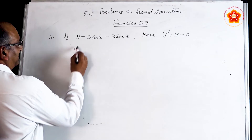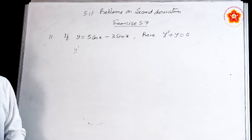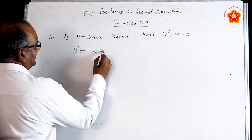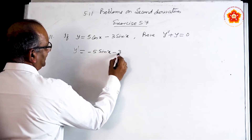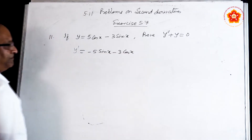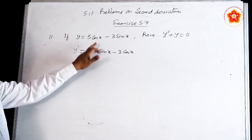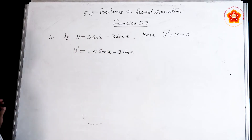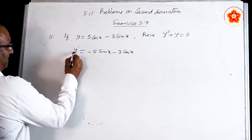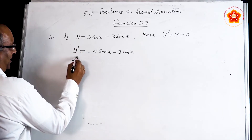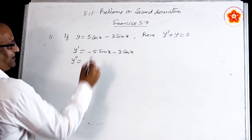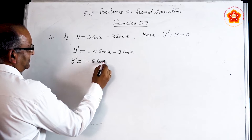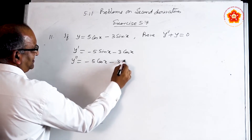What is y′? It is −5sin x − 3cos x, since the derivative of cos x is −sin x and the derivative of sin x is cos x. Now find the second derivative y″, meaning we differentiate a second time. This gives −5cos x − 3sin x.